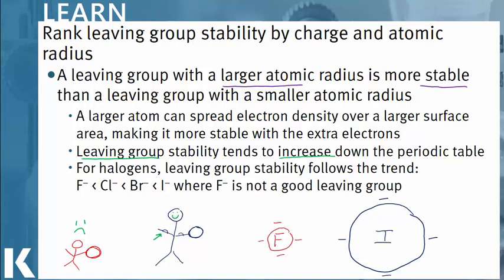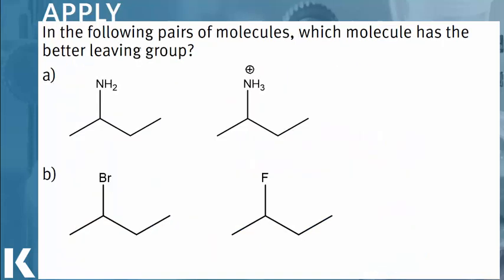Here we need to determine which of these molecules has the better leaving group. If we had NH2 decide to leave, we would produce NH2 minus. NH2 minus is a very strong base. On the other hand, if we had NH3 plus leave, we would get just NH3, a neutral molecule. This is ammonia and this is a weak base. So because ammonia is a weak base and NH2 minus is a strong base, ammonia would be the better leaving group.